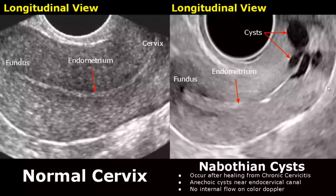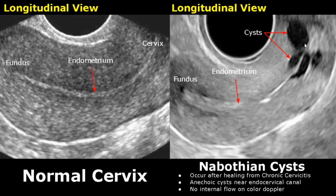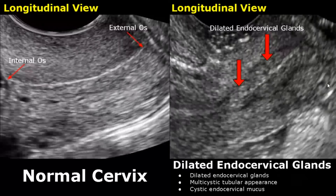Nabothian cysts are benign cysts that usually occur after the cervix heals from chronic cervicitis. We will see anechoic cysts near the endocervical canal; some cysts may have internal echoes. On color Doppler, we will not see any internal flow. Here we can see three cysts, and here is another image showing a single Nabothian cyst near the endocervical canal.